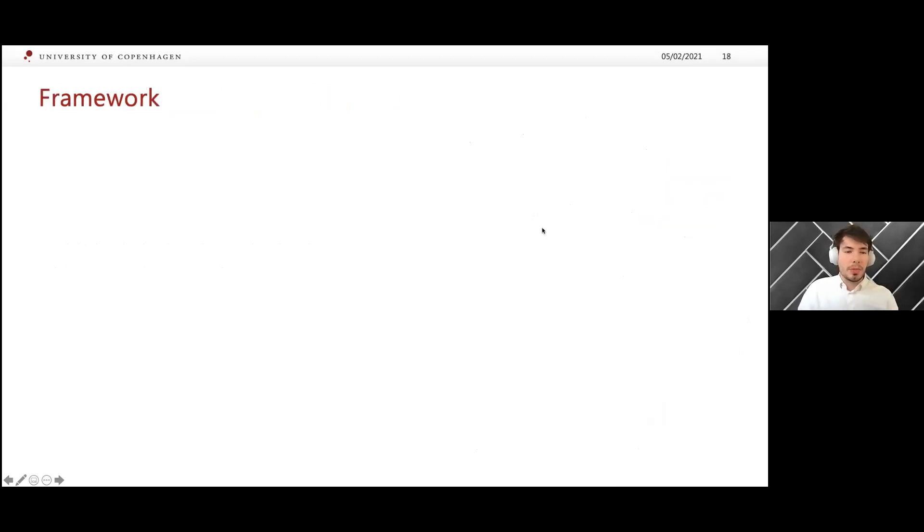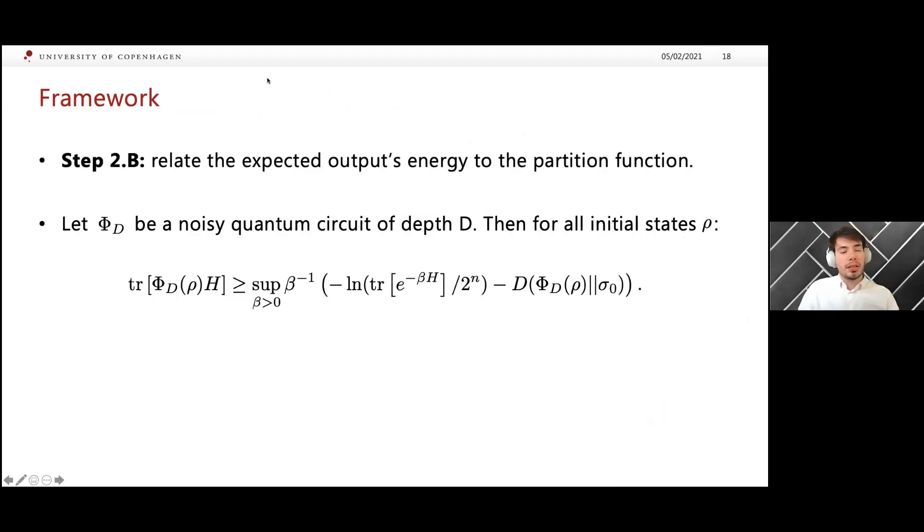Let's be a bit more precise. Using the variational formulation of the relative entropy, one can show this lower bound on the energy. This is log partition function, and this is the relative entropy again, which we can bound because we assume we can bound how fast the noise is driving us to the maximally mixed state.